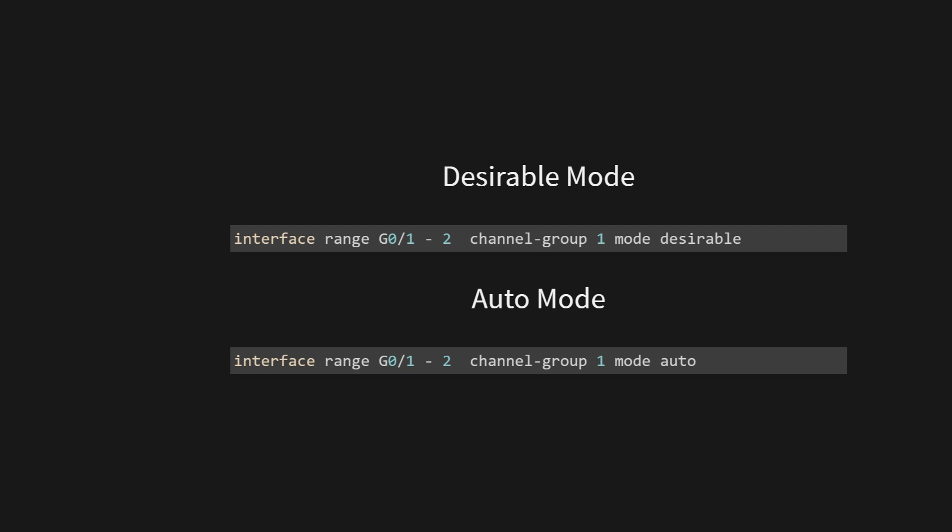Mode desirable sets the port channel negotiation mode to desirable. This mode uses PAGP, a Cisco proprietary protocol, meaning the interface will actively try to negotiate with compatible interfaces on the other end to form a port channel. When you execute this command, GigabitEthernet 0/1 and GigabitEthernet 0/2 are combined into port channel 1 using PAGP with desirable mode. These two Gigabit Ethernet interfaces now act as a single logical interface, providing higher bandwidth, link redundancy, and fault tolerance.